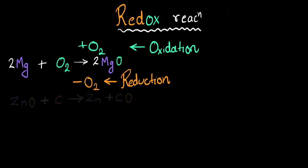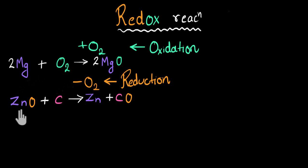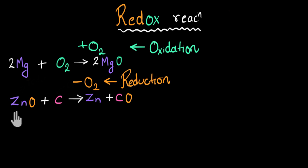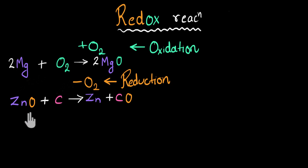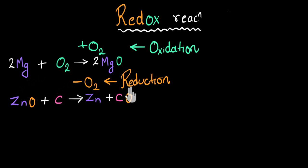I have an example of reduction also. Zinc oxide reacts with carbon to give zinc plus carbon monoxide. Initially zinc was combined with oxygen as zinc oxide, but over the reaction it is losing the oxygen. So since oxygen is lost by zinc, zinc is getting reduced.